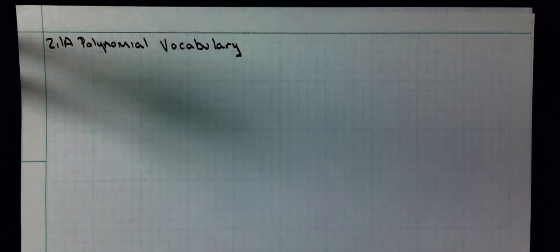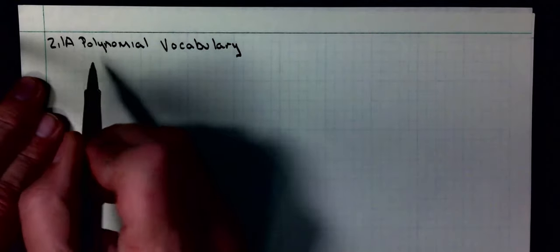So starting with our next chapter, we're going to go from linear and absolute value equations and functions to polynomial. The first thing we need to do is go over some vocabulary.